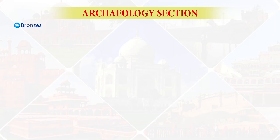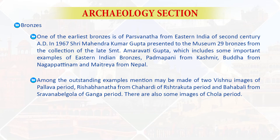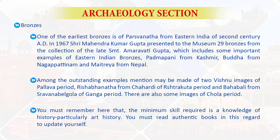Next are bronzes. One of the earliest bronzes is of Parshvanatha from eastern India, dated to the second century AD. In 1967, Sri Mahindra Kumar Gupta presented the museum with 29 bronzes from the collection of late Srimati Amravati Gupta, including important examples of eastern Indian bronzes — Padmapani from Kashmir, Buddha from Nagapattinam, and Maitreya from Nepal. Among outstanding examples are two Vishnu images of the Pallava period, Rishabhanatha of the Rashtrakuta period, and Bahubali from Shravanabelagola of the Ganga period.